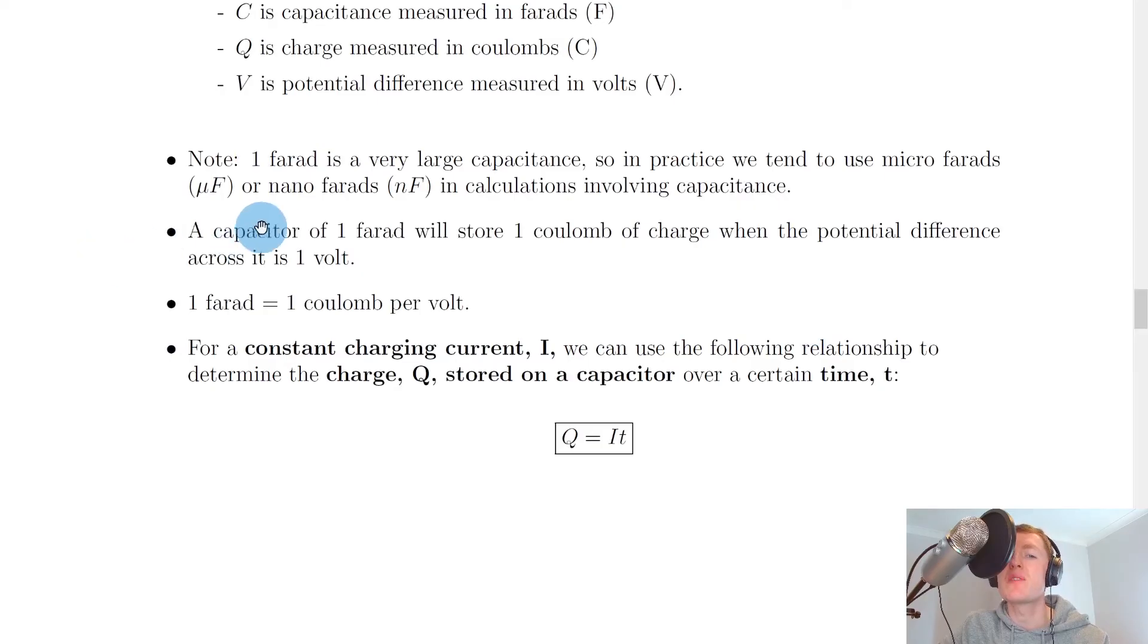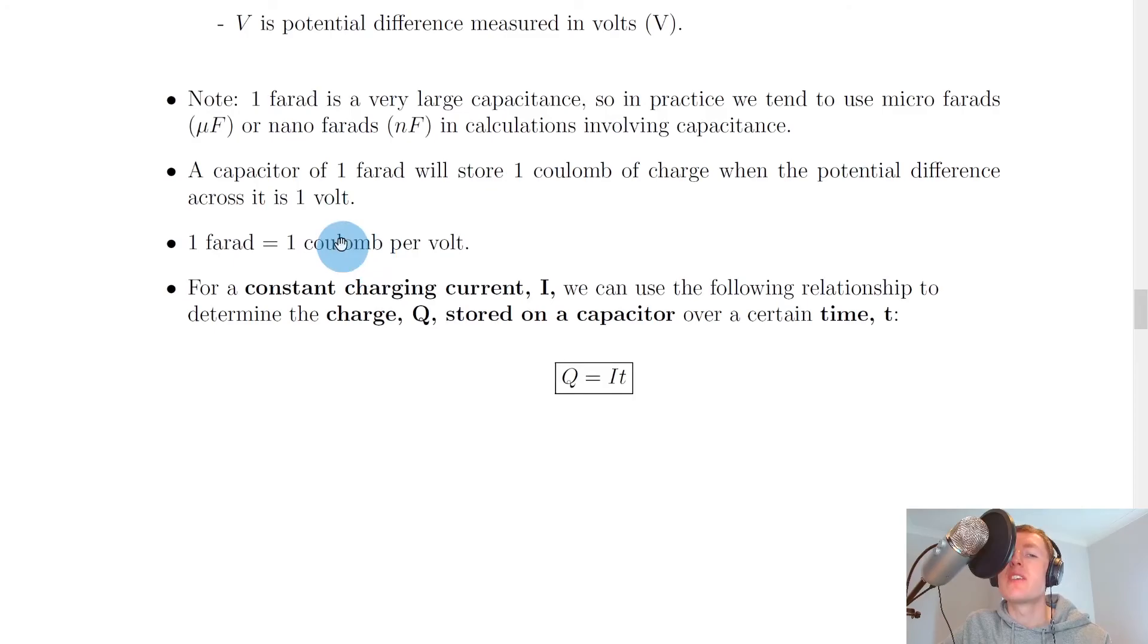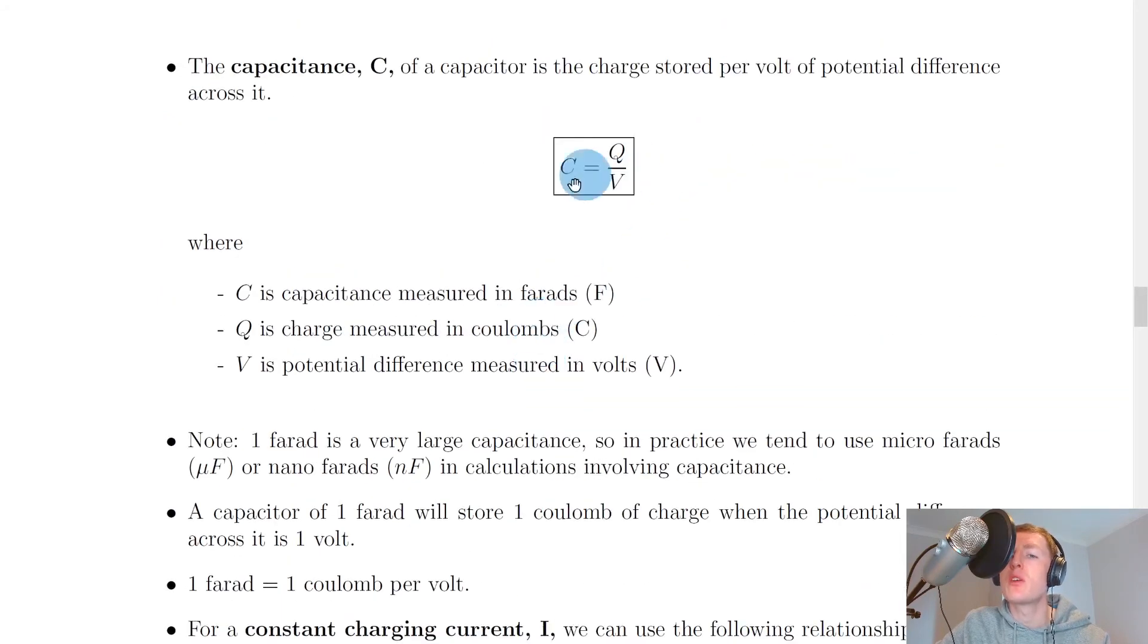You should note that when dealing with capacitance values, one farad is a very large capacitance. So in practice, we tend to use microfarads or nanofarads in calculations involving capacitance. It's very rare to see something like a one farad capacitor because that is a very large capacitance. From this definition, we say that a capacitor of one farad will store one coulomb of charge when the potential difference across it is one volt. And from the equation c equals q over v, we have that one farad is equal to one coulomb per volt. We can see that just by looking at the units of each of these terms in the equation. So remember capacitance is measured in farads. So we have one farad is equal to one coulomb for the charge divided by one volt for the potential difference. So one farad is equal to one coulomb per volt.